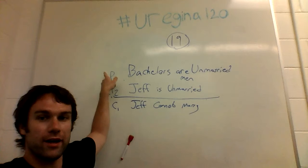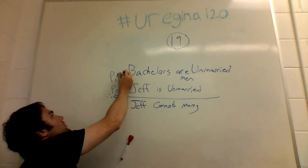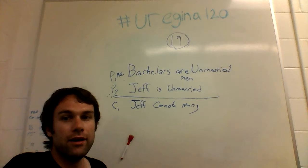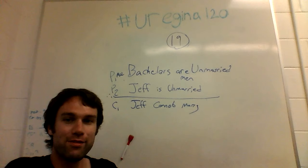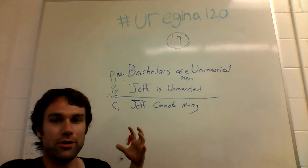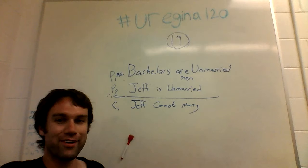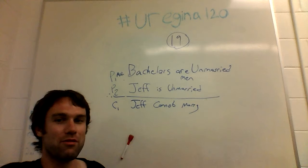It starts with a true statement: all bachelors are unmarried men. This is a tautology — absolutely true, always, and in every case. Then it has another true statement: Jeff is unmarried; I am not married. And then the conclusion of this argument is: Jeff cannot marry. It actually turns out that this conclusion is not derivable from these two premises. It is invalid to derive this conclusion from those two premises alone.